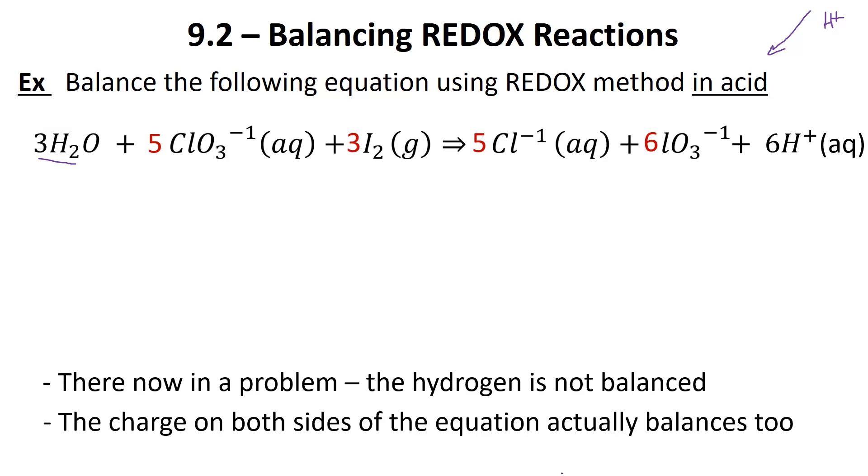The last thing to confirm is do the charges on both sides of our equation add up? We're not used to having charges in equations, but this one we do. If we look, what's the overall charge? Water has no charge, iodine has no charge, but we have five times -1, so we have a net charge of -5 on this side. On the other side, we have five times -1 is -5, six times -1 is -6, so there's -11 there. But now we have this +6. -11 plus 6 equals -5. So we also balanced the charge by balancing the oxygens and hydrogens.